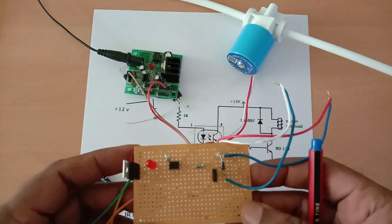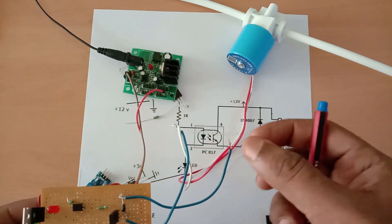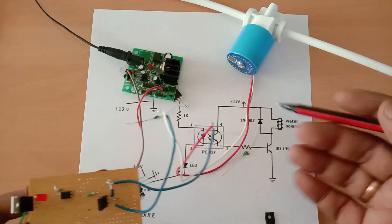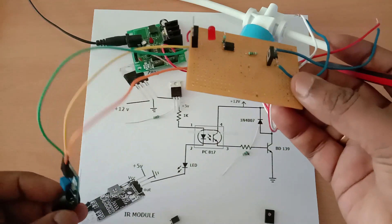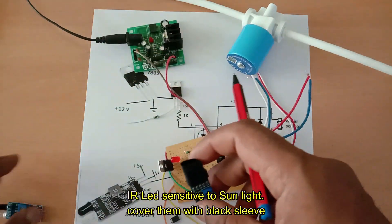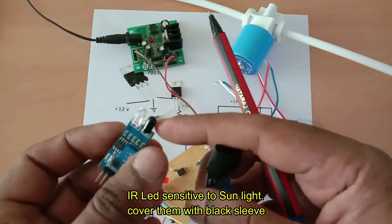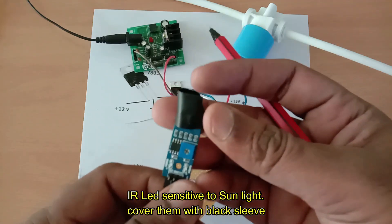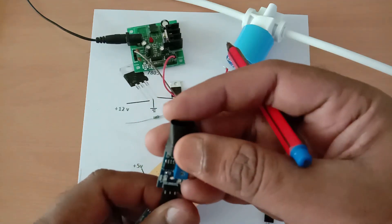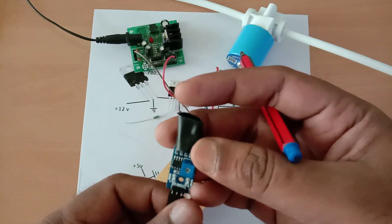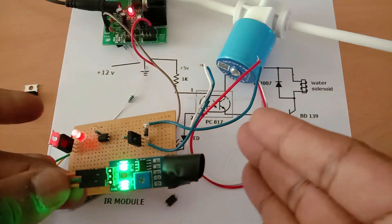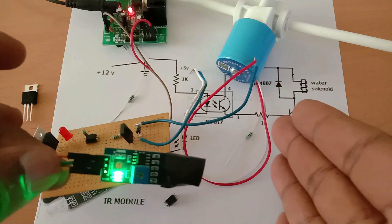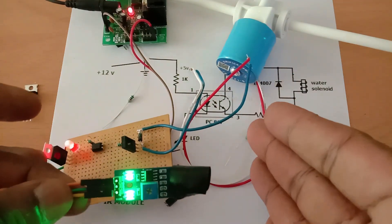When an object is detected—that is, when a hand is brought near the IR module—actually, this IR module is sunlight sensitive, so always cover it with black tape. When a hand is brought near the IR module, it goes low, which in turn drives the optocoupler and then drives the solenoid or water pump.